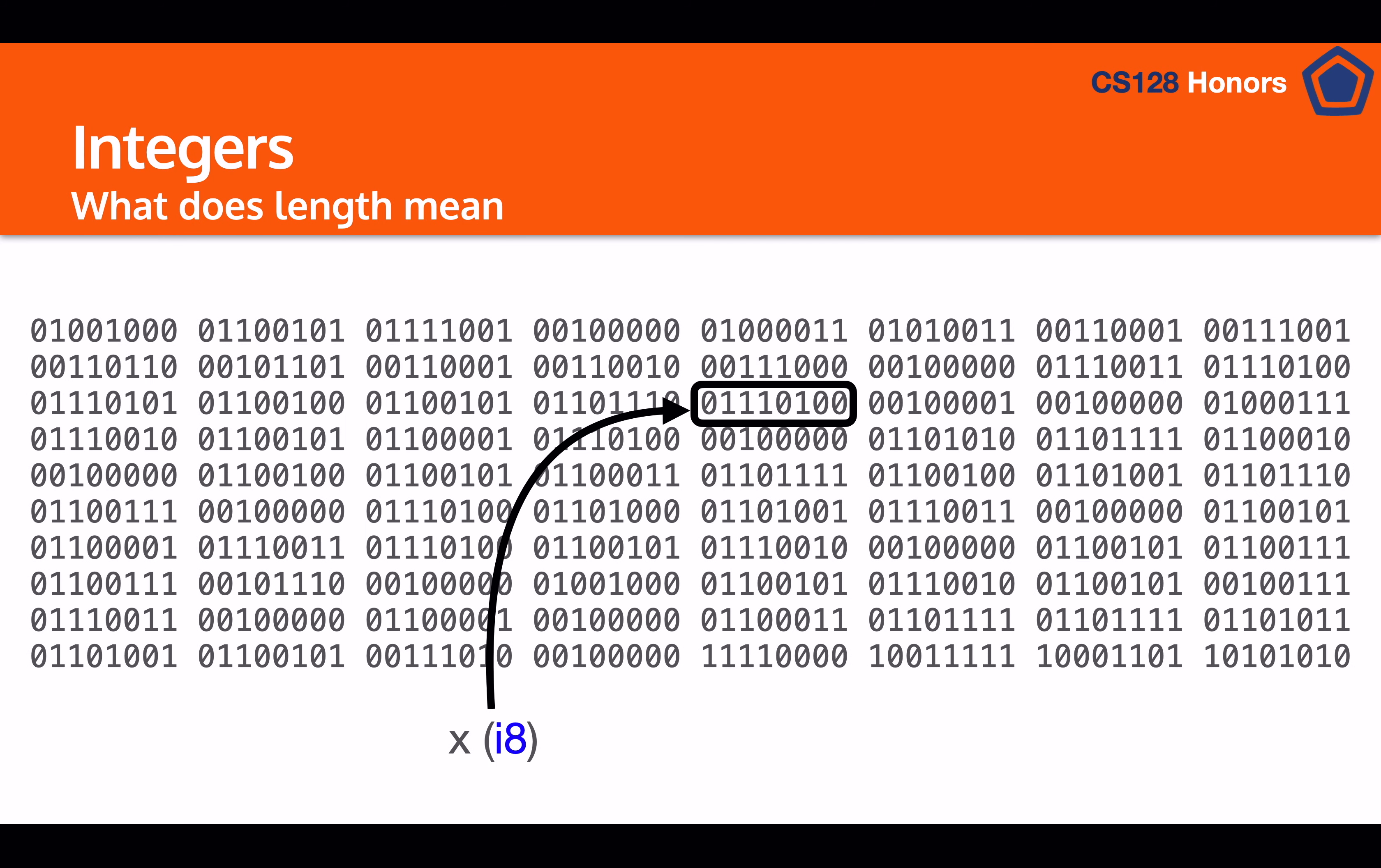So with integers, the size corresponds to how many bits, binary digits, are being used to store these integers. So for example, in this abstract memory, we have an i8, which is an 8-bit integer. And now, let's say instead we want a 16-bit integer. And so now, it will have 16 ones and zeros all together representing this integer.